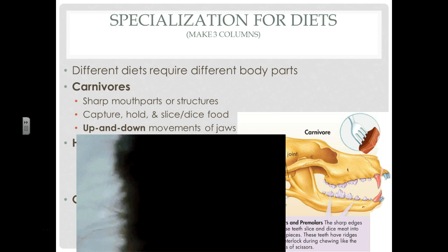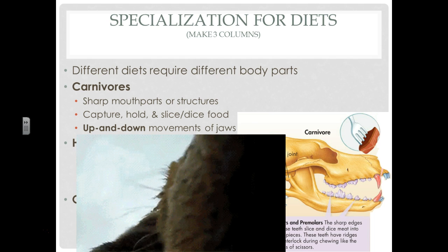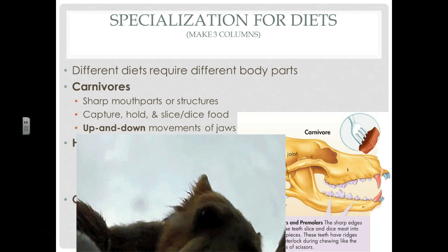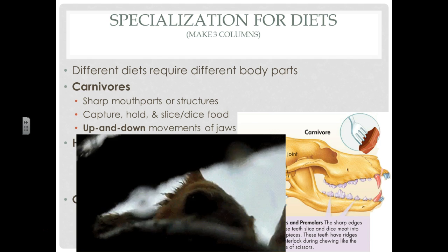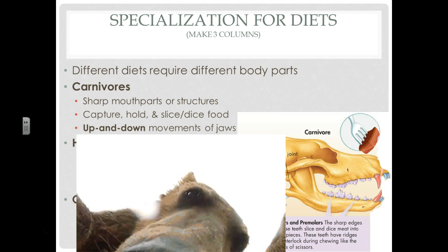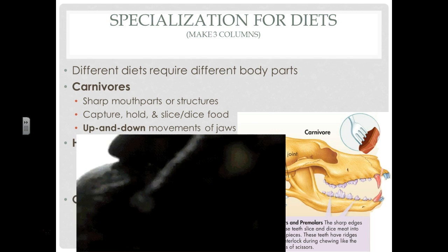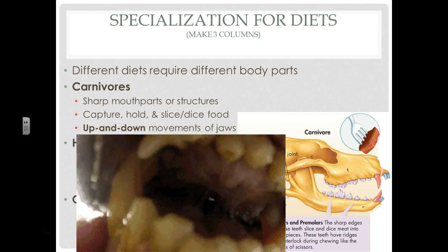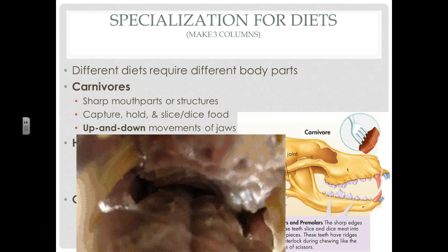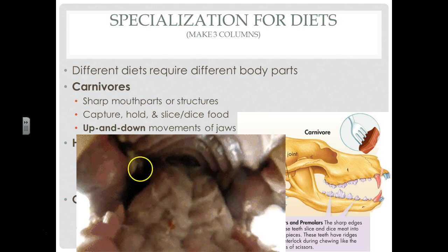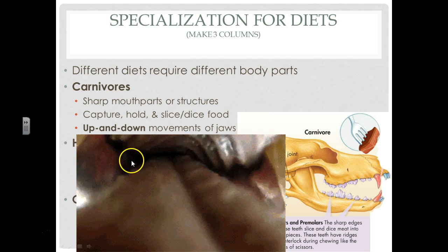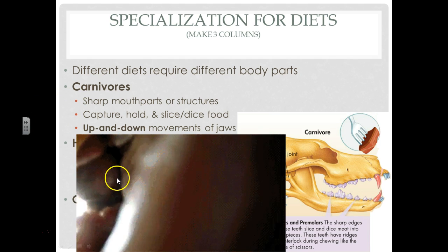Here you can kind of see an example, getting nice and close into a carnivore's mouth. There are those very long claws — not for lettuce, but for holding and capturing prey. Now we can get a nice view inside the bear. You can see those sharp, pointy teeth, and some sharp teeth at the back on either side as well.